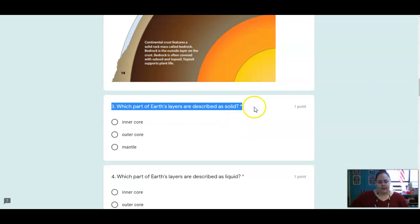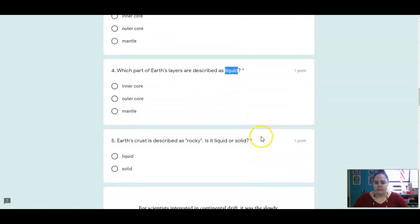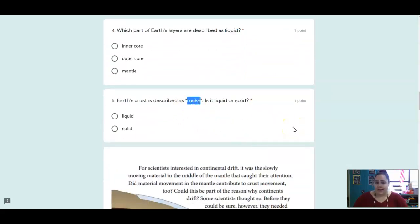All right, so which part was described as solid? The inner core, the outer core, or the mantle? And which parts were described as liquid? Earth's crust is described as rocky. Does that mean it's a liquid or a solid?